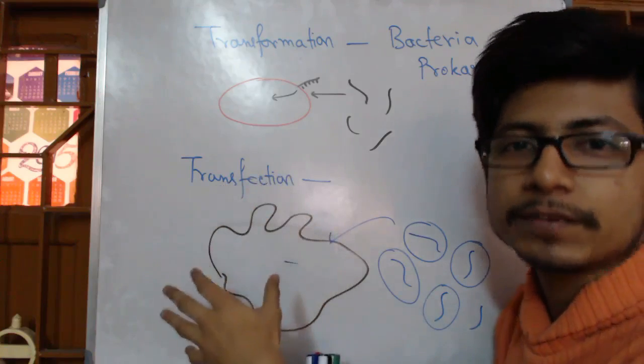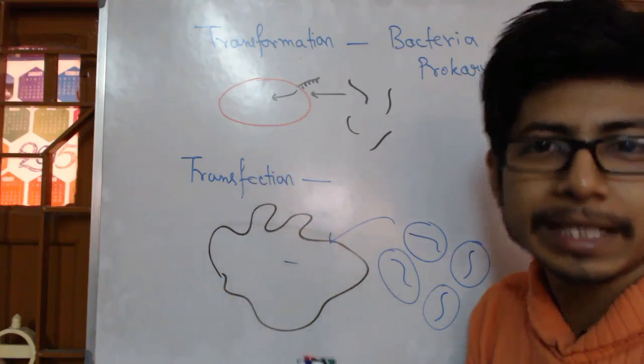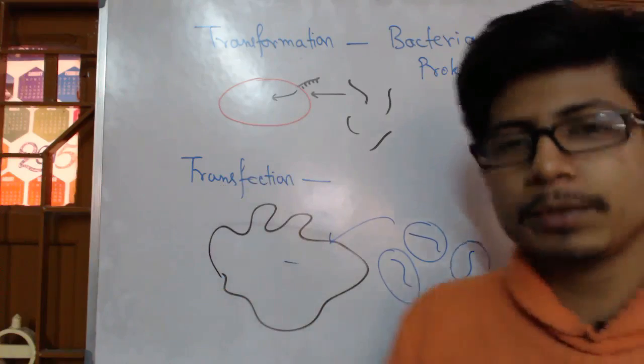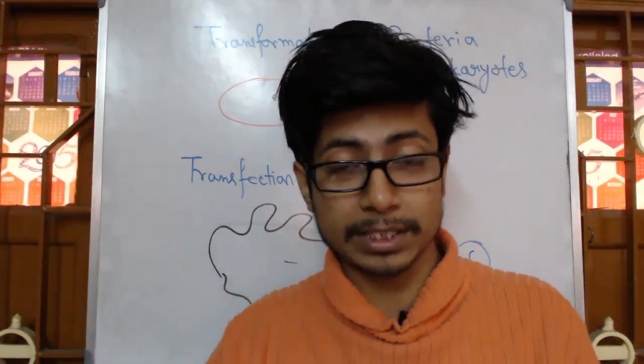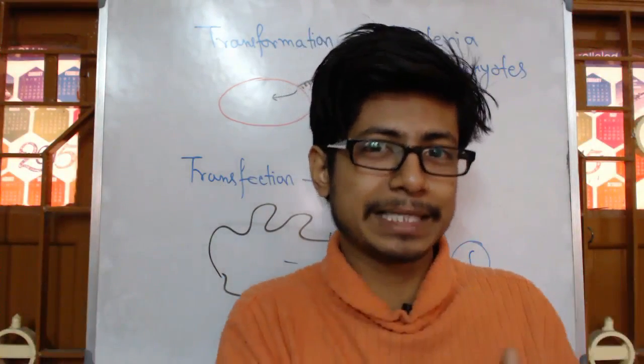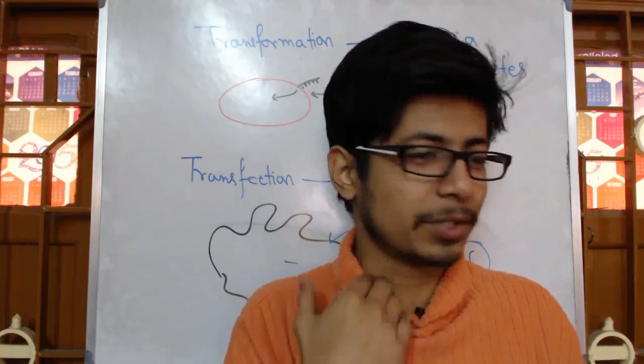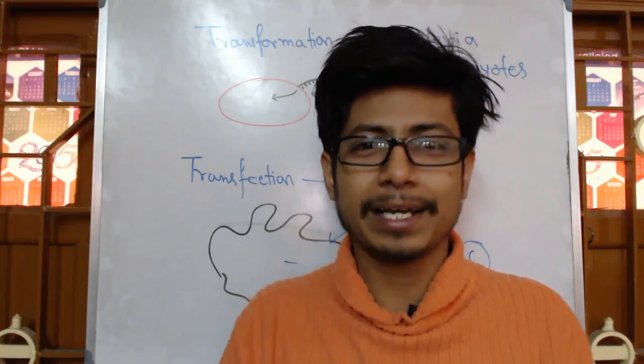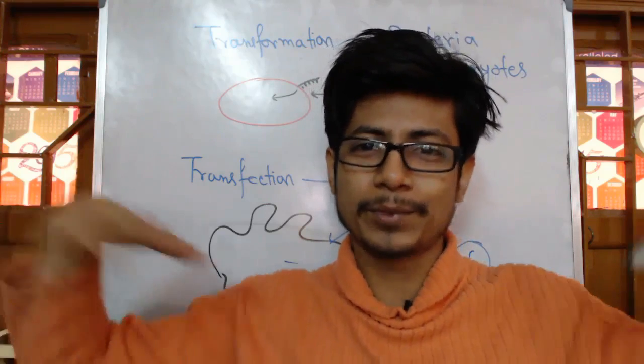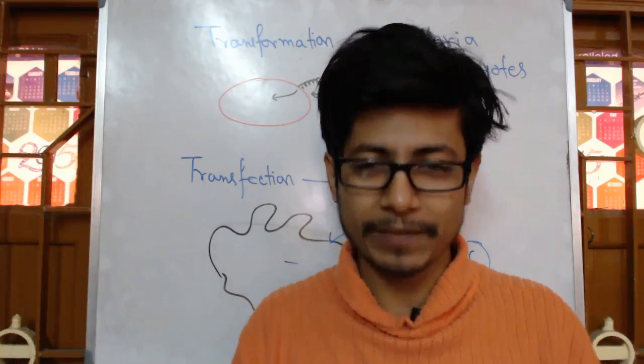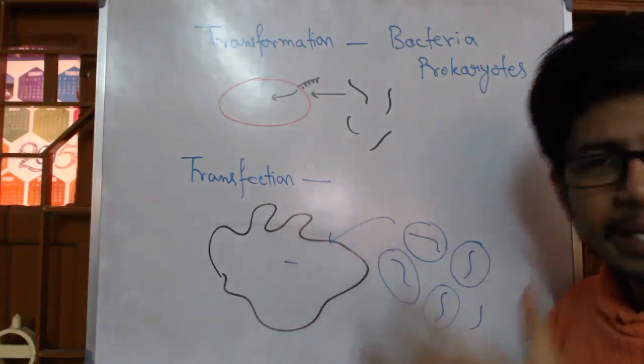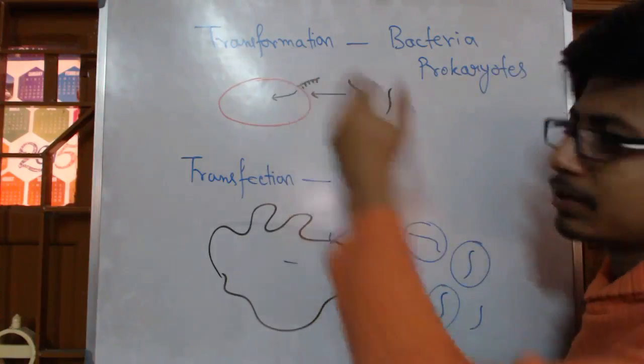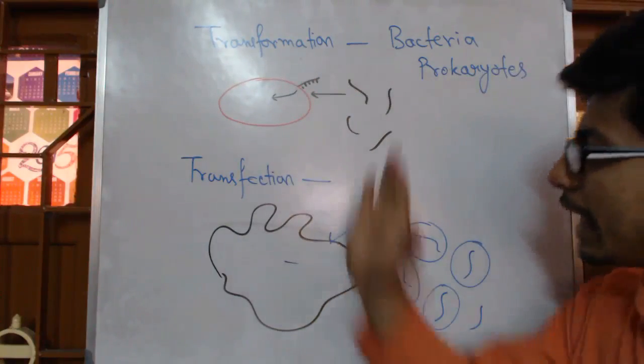So to delete that confusion, to erase that confusion, we give a separate name, that is transfection, which will not conflict with any other processes. Whenever you are naming a process, you should make sure that that name is unique. It's not copied or duplicated from somewhere, because if it's duplicated, referring to that name will give so many options. It is confusing.